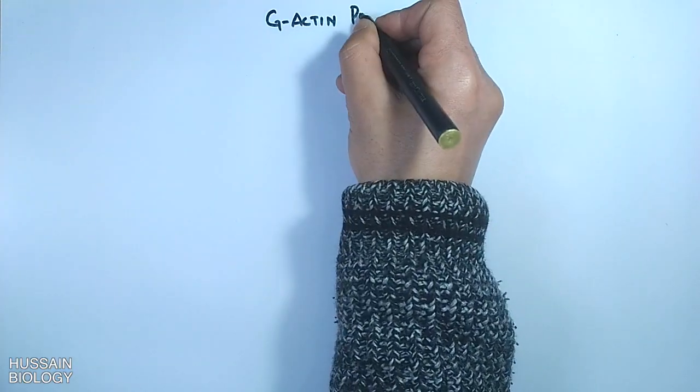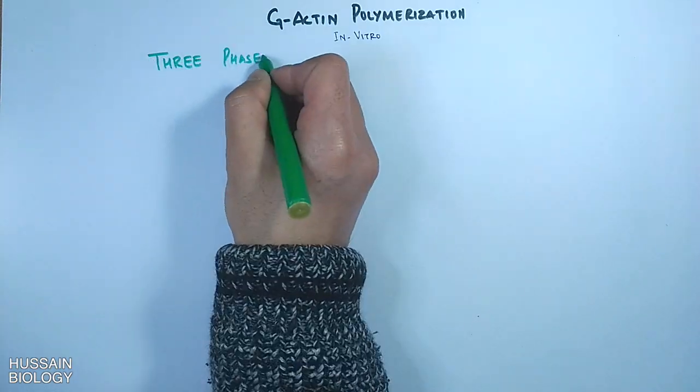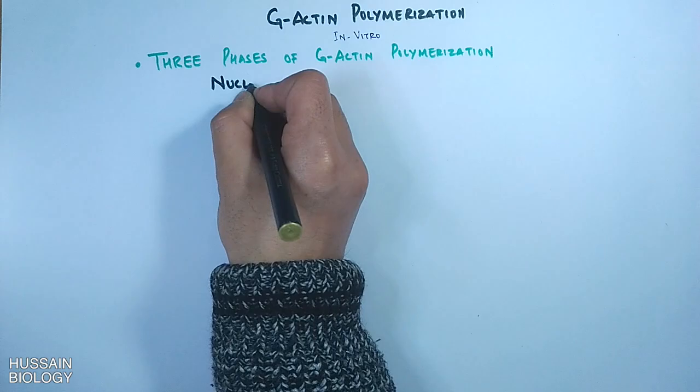Now let's see how G-actin polymerization takes place in in vitro conditions. There are three phases of G-actin polymerization: nucleation, elongation, and steady state.